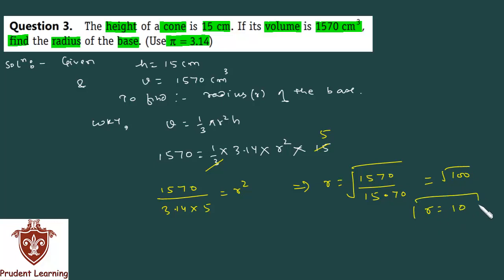But minus 10 we will discard. Reason, you know. So radius you get 10, and unit, what is it? Centimeter, because the rest of the information is in centimeters. So radius of the given cone is 10 centimeters.